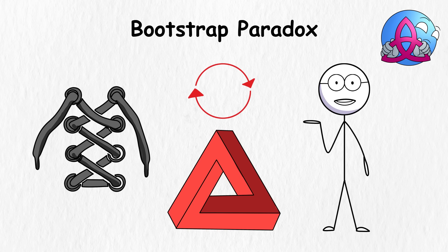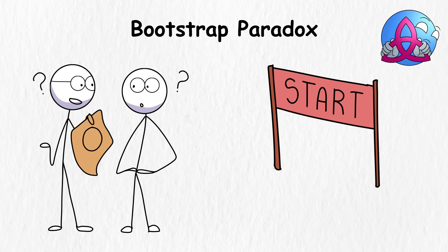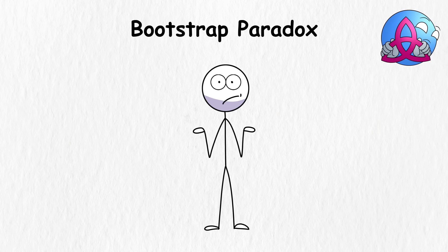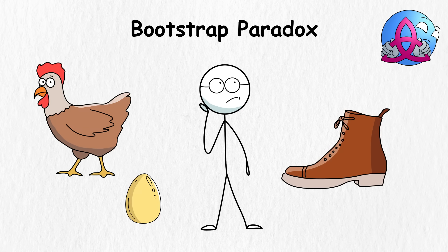In simple terms, this paradox exists when an object has no clear origin. Draw a circle on a piece of paper and ask people where the starting point and the circle ends. No one could tell you the answer because the circle itself has no clear starting point or origin as far as others are concerned. It's the same scenario in the Bootstrap Paradox, where you'll be left wondering which, between the egg and the chicken, came first.